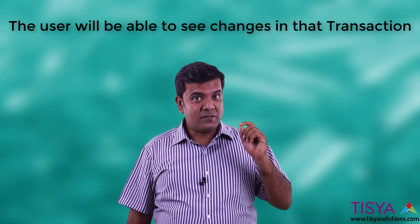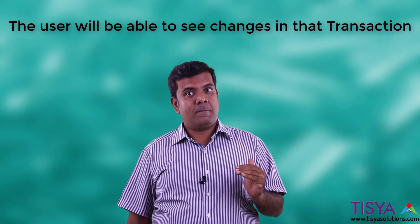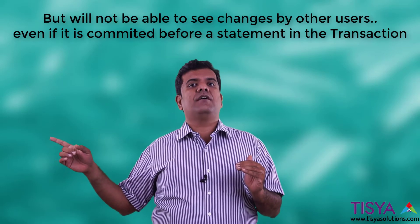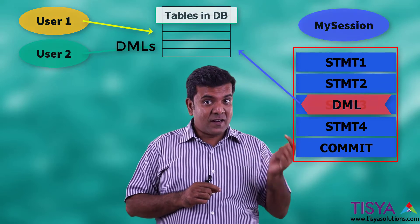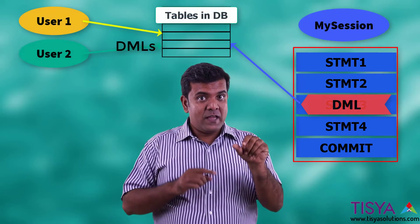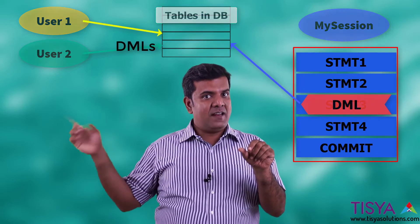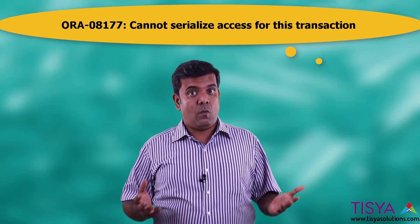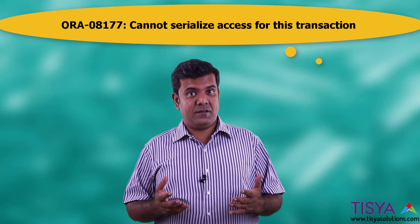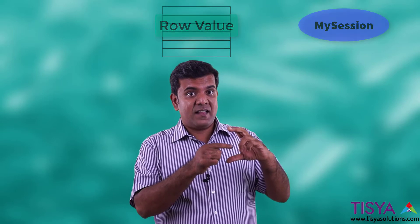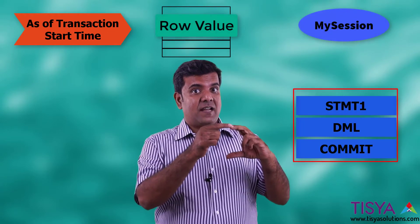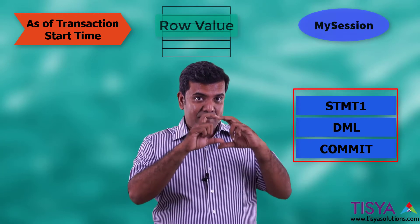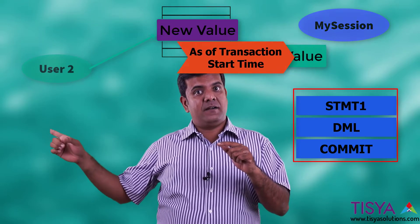In a transaction with serializable isolation level, the user will see his own changes after the transaction has begun but will not see changes made by other users. Also, when this user tries to manipulate a row, it checks whether the current value in the row is as of the time the transaction began. If any other user has changed it, the DML will fail with error ORA-08177, which means 'cannot serialize access for this transaction', because another user has manipulated and committed that row in between.